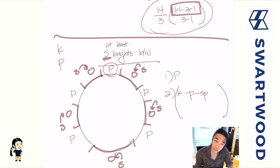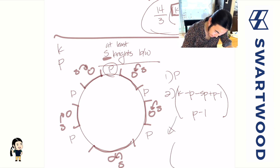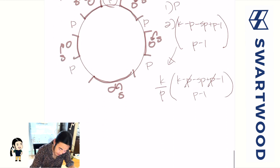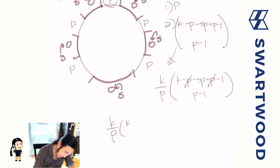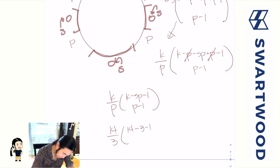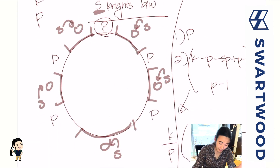We have K minus P minus SP knights to place into P buckets, which means P minus one dividers. Just like before, multiply by K since any knight could have been Percival, then divide by P for the overcounting. Cleaning this up gives: K over P times K minus SP minus 1, choose P minus 1. Plugging in our earlier numbers - K equals 14, P equals 3, S equals 1 - gives 14 over 3 times 14 minus 3 minus 1 choose 3 minus 1, which is exactly the same answer as before.